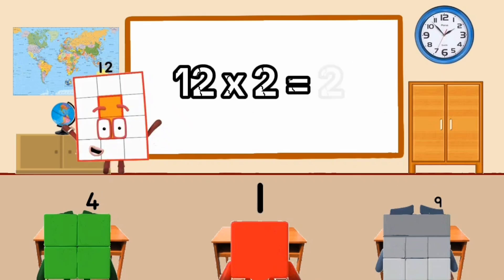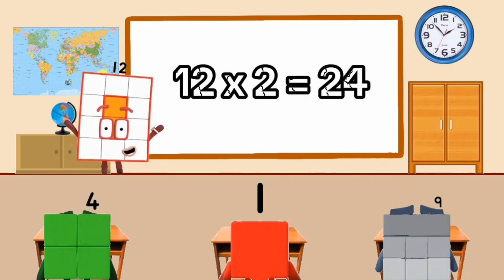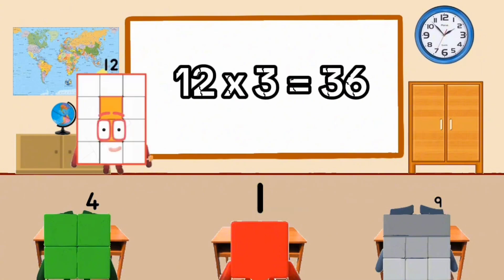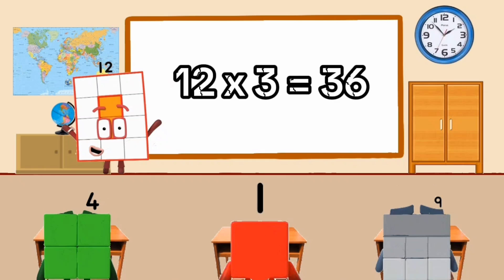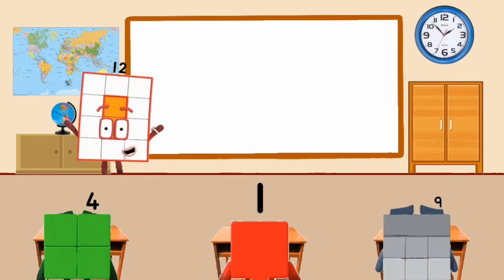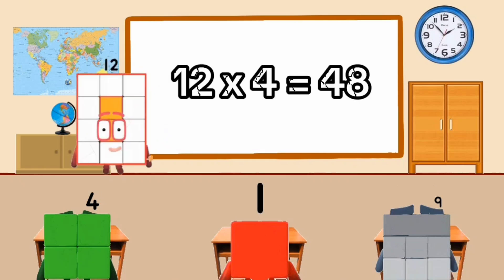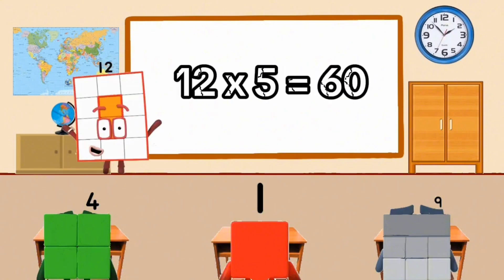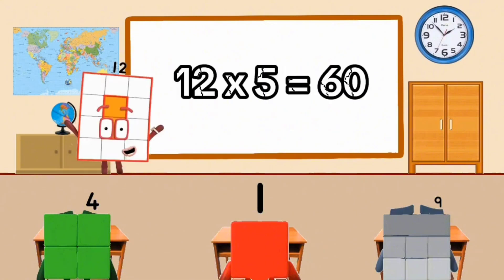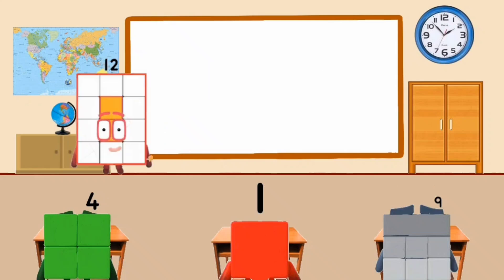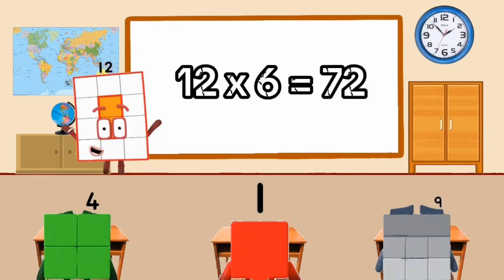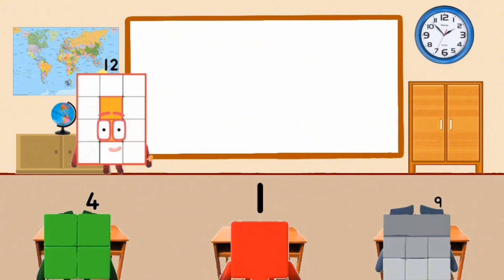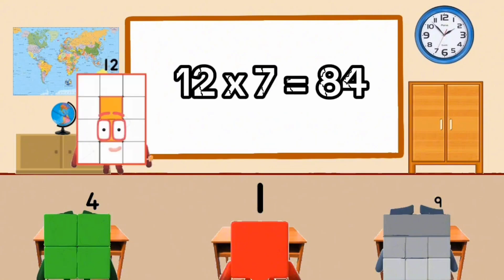12 times 2 equal 24. 12 times 3 equal 36. 12 times 4 equal 48. 12 times 5 equal 60. 12 times 6 equal 72.